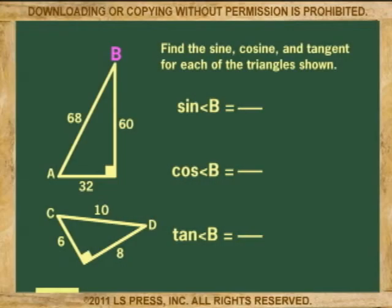Let's check this out. The sine of angle B is 32, the opposite, over 68 for the hypotenuse, which is the 0.4706 value we had before for the cosine of angle A.